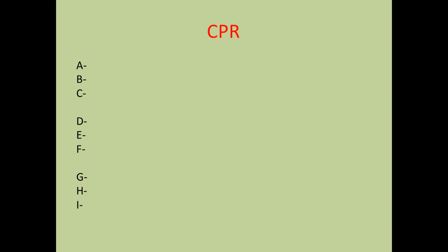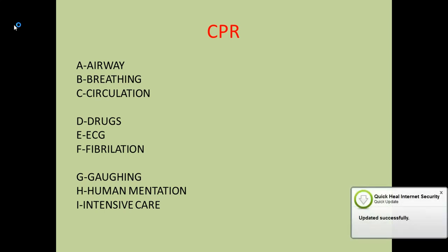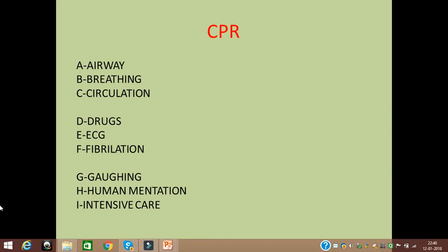Mnemonics for CPR: A, B, C, D, E, F, G, H, I — standing for airway, breathing, circulation, drugs, ECG, fibrillation, gauging, human mentation, and intensive care. BLS stands for basic life support, ACLS for advanced cardiac life support, and PLS is another level. This concept of CPR was invented by a pioneer considered the father of CPR.